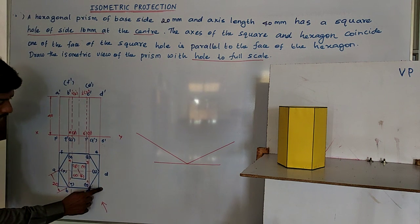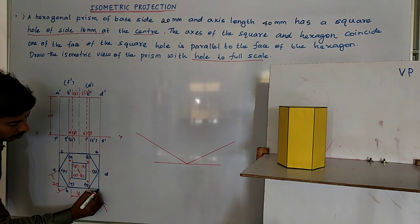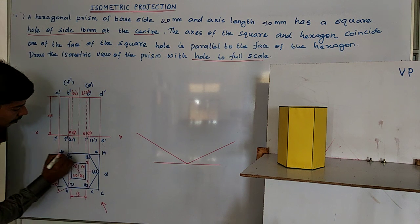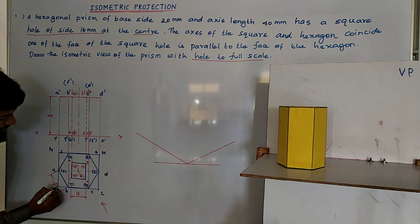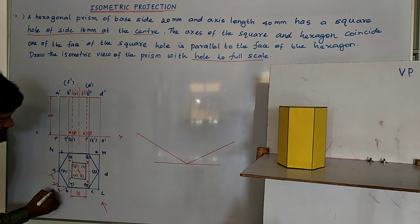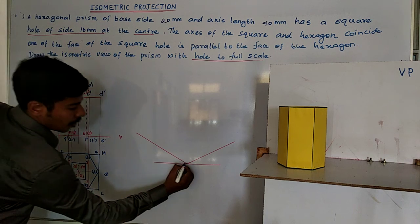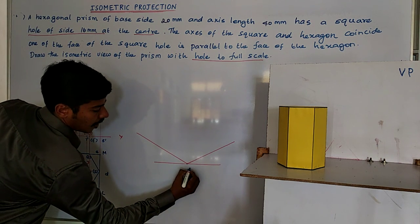I keep the view sides here. I will name them as L, M, and O. So this point is our L.